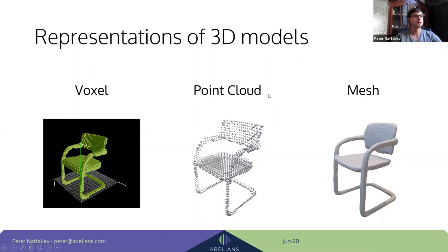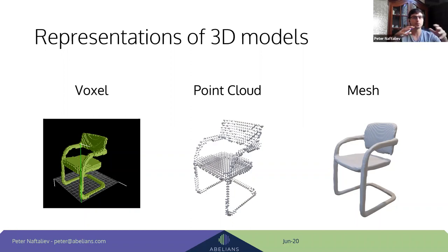Another very common representation is a mesh — polygons, usually triangles, connected with edges to form a 3D model. We also need the flexibility to move between these representation types. Moving from voxel to point cloud is straightforward. Moving from point cloud to voxel will be covered in the lecture. Moving from mesh to voxel is also fairly simple — you sample points in 3D space and check if they're inside or outside the mesh using a tool called Binvox.